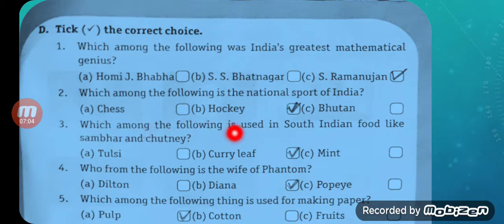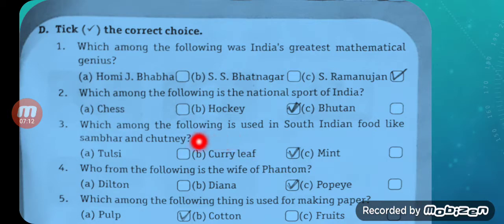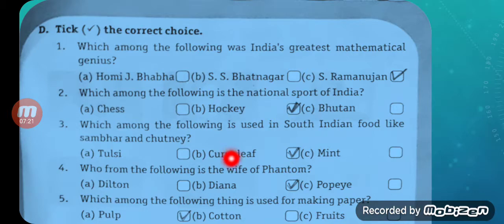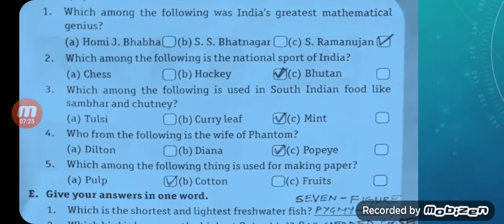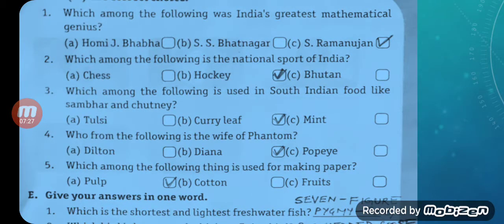Question number three: Which among the following is used in South Indian food like Sambar and Chutney? Options: Tulsi, Curry Leaf, or Mint. The answer is Curry Leaf — C-U-R-R-Y L-E-A-F. We use curry leaf in Sambar and Chutney both.